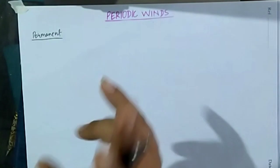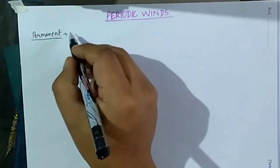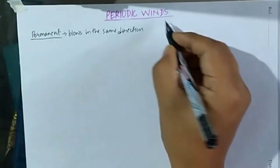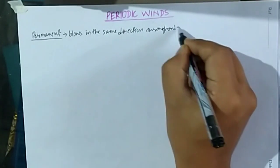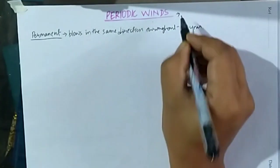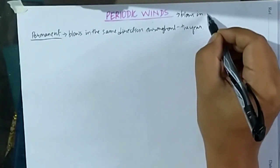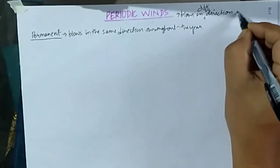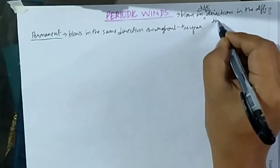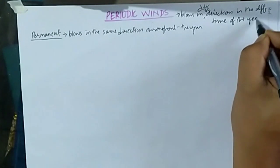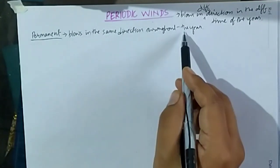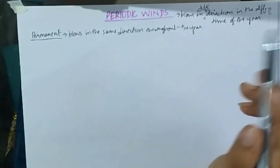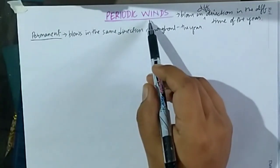The difference between the permanent and the periodic winds: permanent winds, as the name suggests, blow in the same direction throughout the year. But the periodic winds blow in different directions at different times of the year - in different seasons, the direction of the winds also changes.